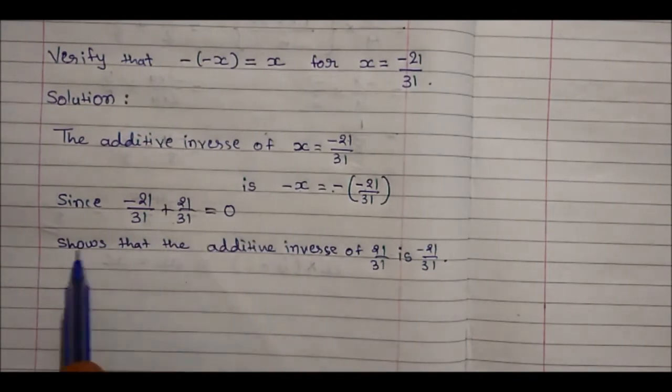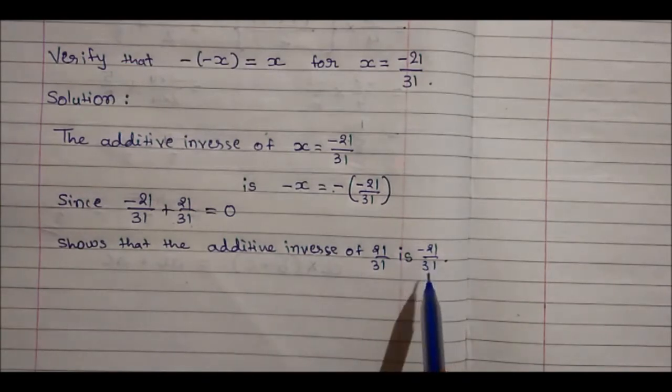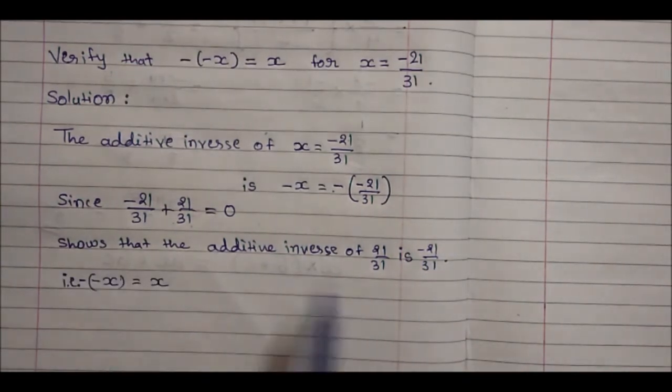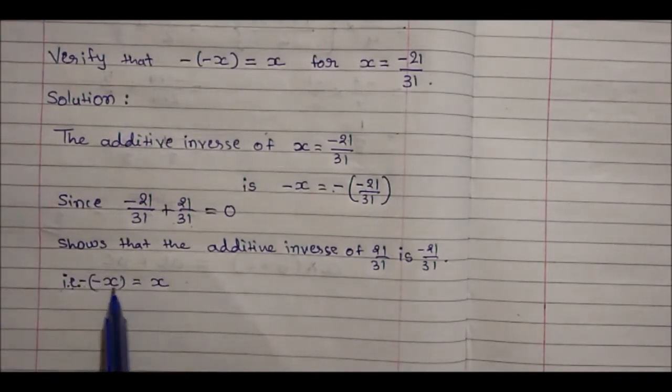This shows that the additive inverse of 21 upon 31 is minus 21 upon 31, which shows that minus of minus x is equal to x. Hence verified.